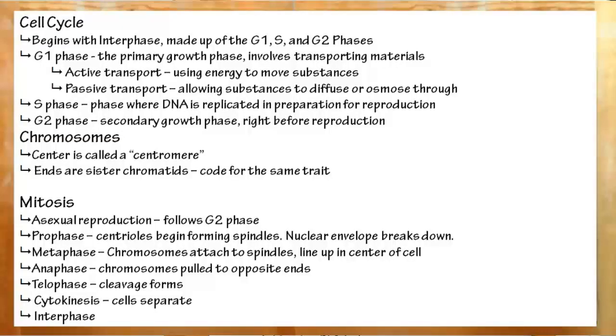To recap, the cell cycle comes in four parts: G1, S, G2, and cell division. In the G1 phase, this is the main growth phase, and the cell grows. There are two types of transport that the cell can use: active and passive.